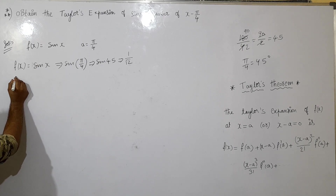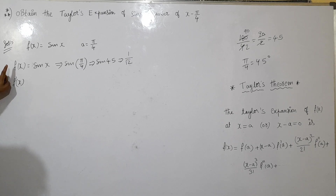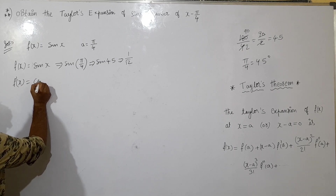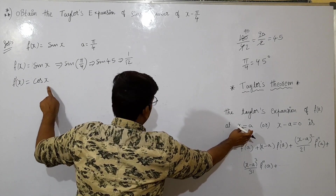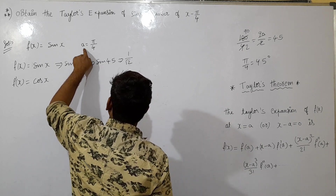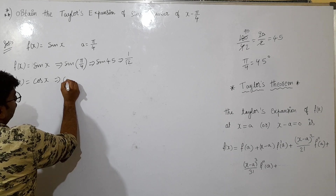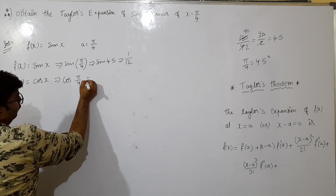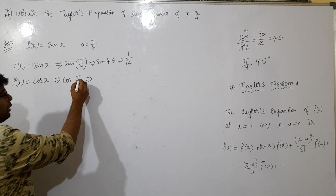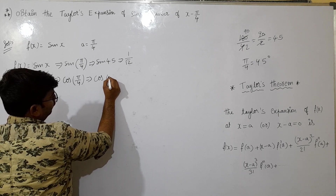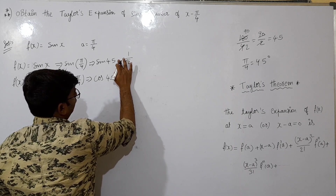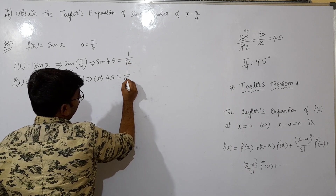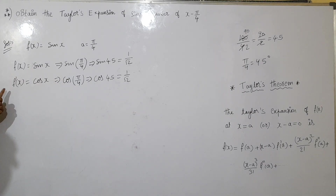Now, if we call f dash of x — the first derivative — where we call f dash of x is cos pi by 4. pi by 4 is equal to 45. cos 45 is equal to 1 by root 2. So, 1 by root 2 is our answer. This is the first derivation applied.